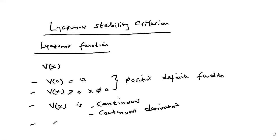Property four is that the derivative of V(x) is less than or equal to zero. If any function V(x) meets all four properties — V(0) = 0; V(x) > 0 for all x ≠ 0; continuity with continuous derivatives; and V̇(x) ≤ 0 — then that function is called a Lyapunov function.